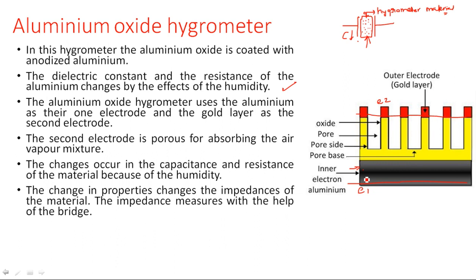The change in properties changes the impedance of the material. The impedance is measured with the help of a bridge, generally a Wheatstone bridge or any DC bridge. Wheatstone bridge is preferred because it is used to measure resistance values.